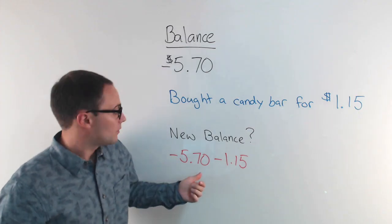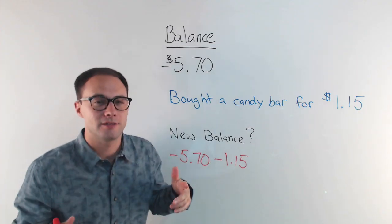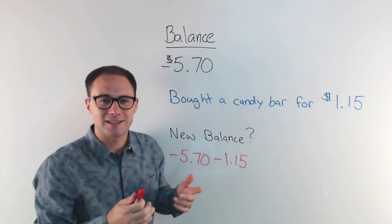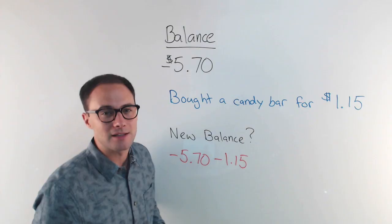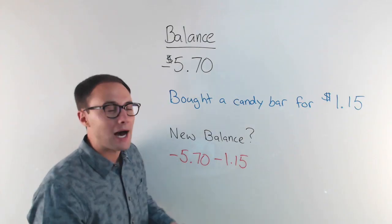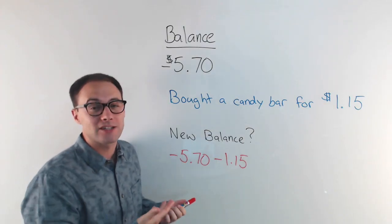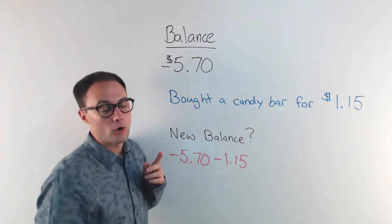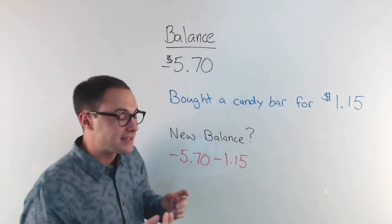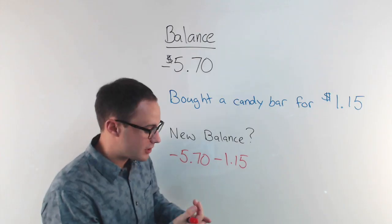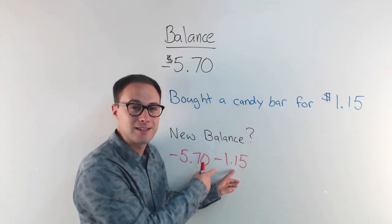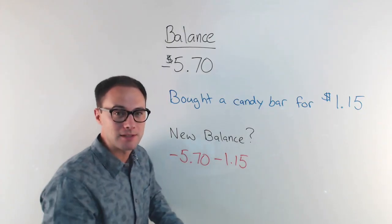And we know when we're subtracting integers, we've done that before, subtracting an integer is the same thing as adding its opposite. The same rules apply when we're subtracting rational numbers, whether it's decimals or fractions or mixed numbers, the same rules apply.